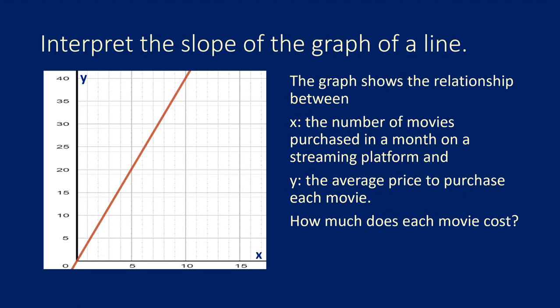Interpret the slope of the graph of a line. The graph shows the relationship between X on the horizontal axis, and X represents the number of movies purchased in a month on a streaming platform.